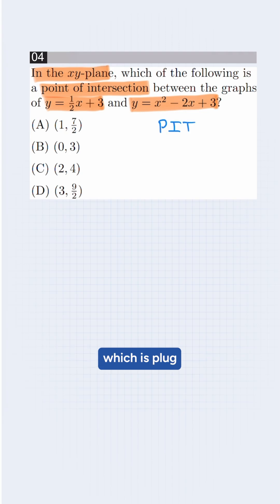First, we use the PITA, which is plug-in-the-answers method. We test for option A, which is (1, 7/2).